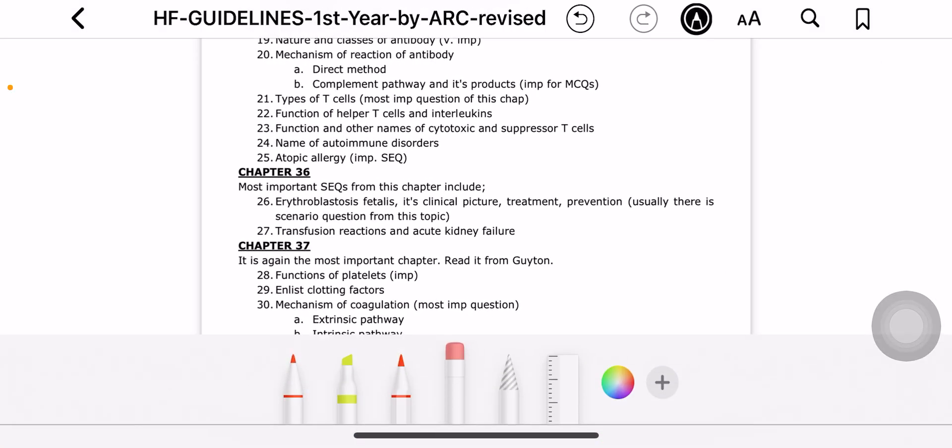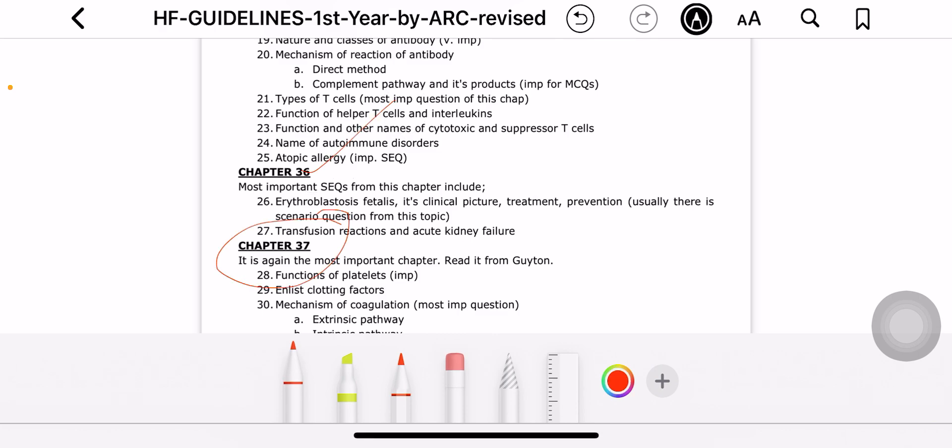Okay guys, so we were on Chapter 36, which we've covered. Now we're covering Chapter 37 on blood. Chapter 37 is the most important chapter of blood physiology. At the start, you'll see some characteristic features of platelets. You should read those carefully, including the mechanism of platelet plug formation. You should know the bleeding time and normal clotting time.